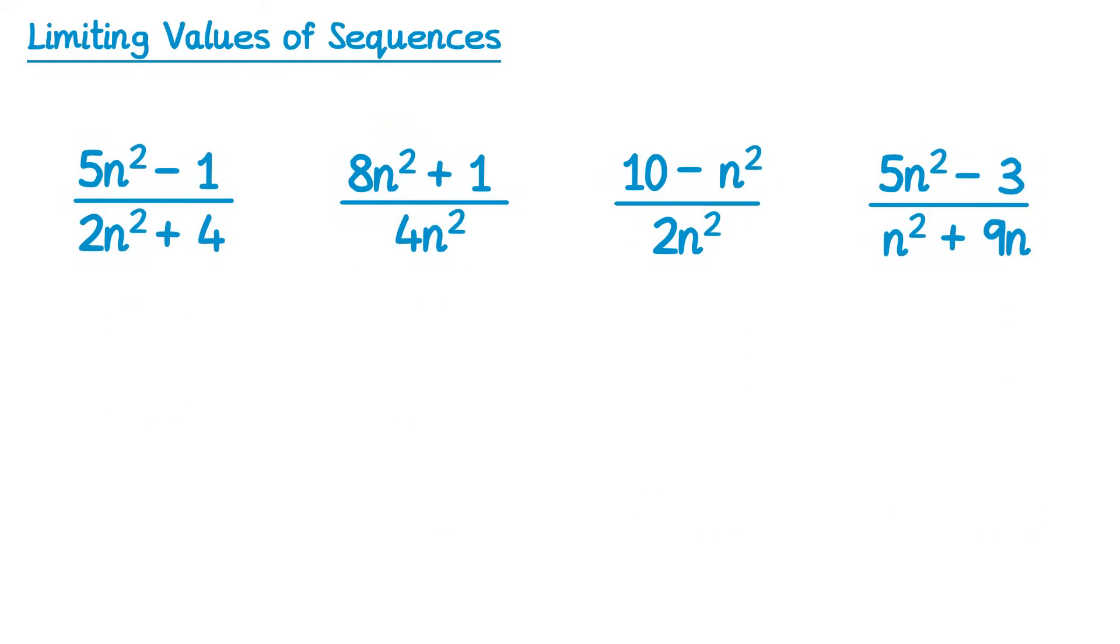For these ones we have some n squareds, but you do them in pretty much the same way. It's just the last one here that's a bit tricky. So for this first one, it's the negative 1 and plus 4, so we would end up with 5n squared over 2n squared. Cancel out the n squareds and you have 5 over 2, which is 2.5.